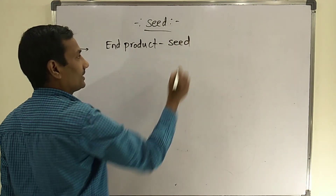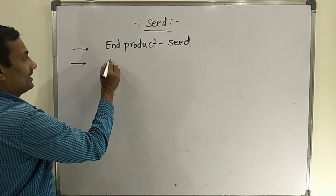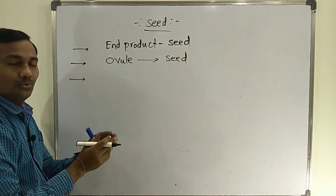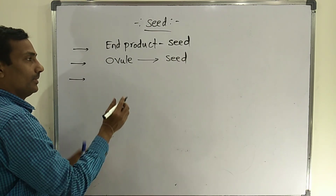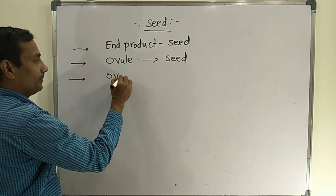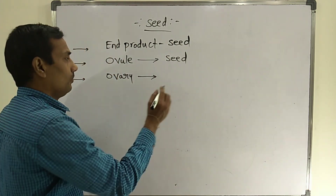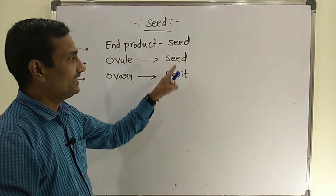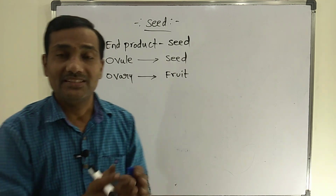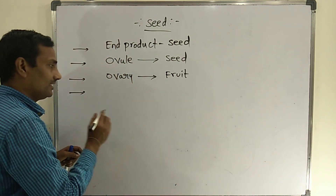The seed is the product of sexual reproduction. Seeds are formed because of ovules — the ovule converts into the seed. Seeds are formed inside the fruit, and the fruit is formed because of the ovary. Whatever part is there in the carpel or pistil, that is the ovary. After fertilization, the ovary converts into the fruit. The number of seeds is not fixed; depending upon the ovules, we can expect a number of seeds in the fruit.